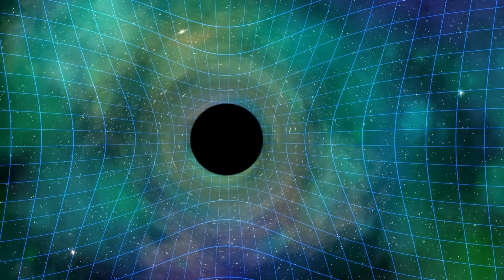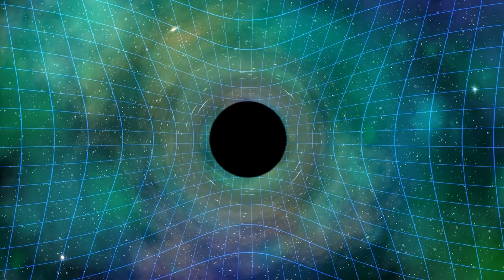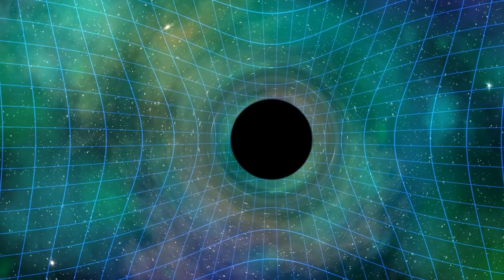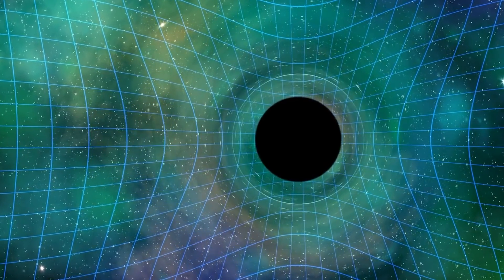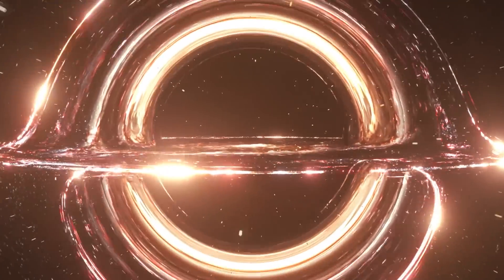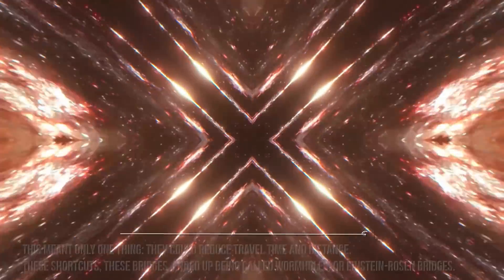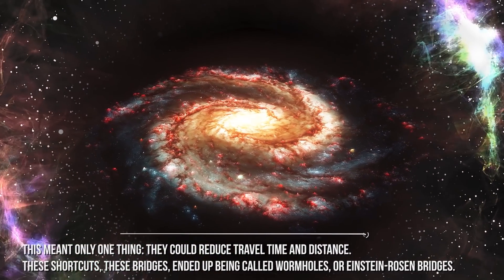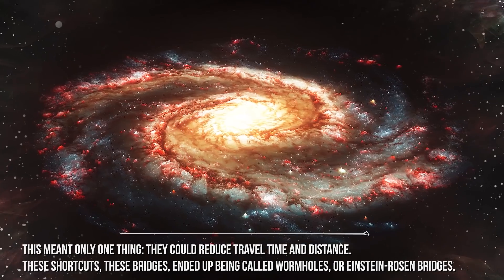So scientists started to work hard on this, and in 1935, Einstein and Rosen tried to use general relativity to show that the existence of such bridges through space-time could be possible. According to them, such bridges connecting a white hole and a black hole could connect two different points in the space-time grid. This meant only one thing, they could reduce travel time and distance. These shortcuts, these bridges, ended up being called wormholes, or Einstein-Rosen bridges.